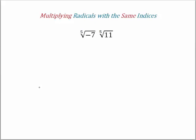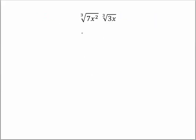Let's get into multiplying radicals. This first section is multiplying radicals with the same indices. Remember that index is the same thing as root — I commonly refer to it as root. As long as they are the same index or root, we can put them together. We start off easy: we have the 5th root of negative 77, and that's as far as we can go with that.